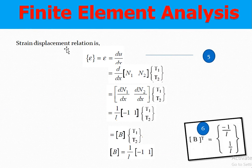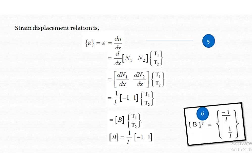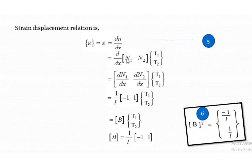The strain-displacement matrix, which we have seen already — the strain-displacement relation can be written as epsilon equals dU by dH. The strain epsilon represents the change in displacement with respect to the original length. When you take U with respect to the shape function, the displacement relation is written in terms of N1, N2 and nodal values d1, T2.